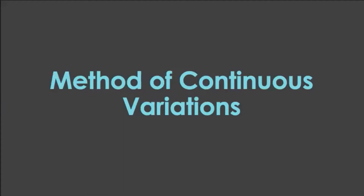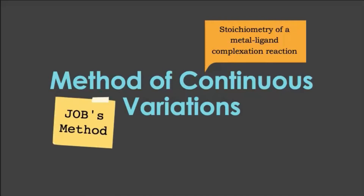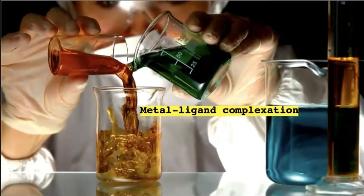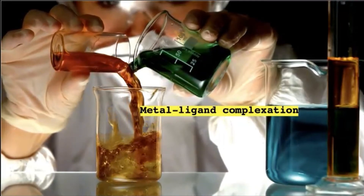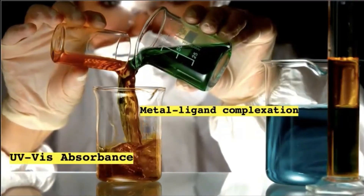One of the most popular and simplest ways to determine the stoichiometry of the metal-ligand complexation reaction is the method of continuous variations, often referred to as Job's method. For this discussion, we'll only be focusing on the metal-ligand complexation reaction and the most common dependent variable for the y-axis: the UV-Vis absorbance.